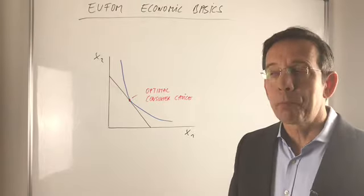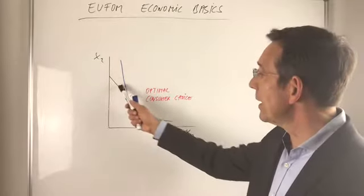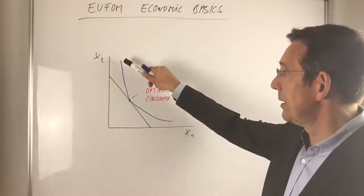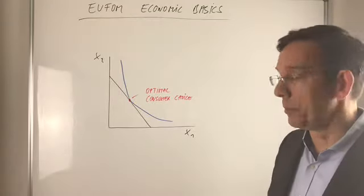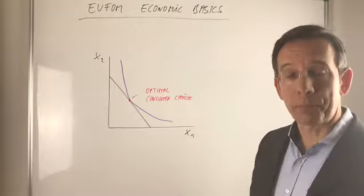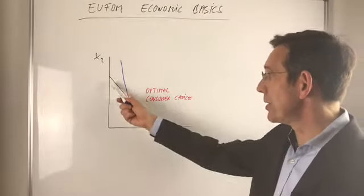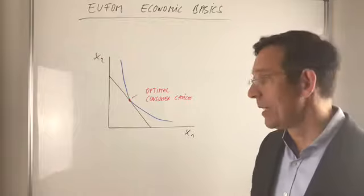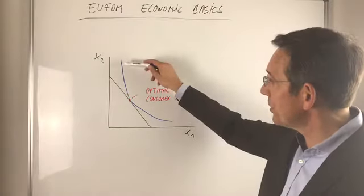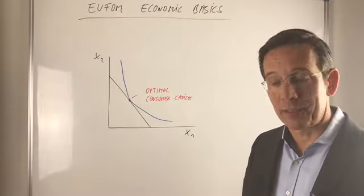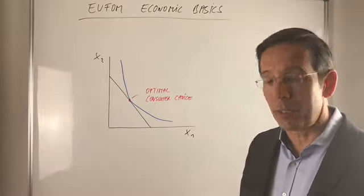Hi! So if we put together on the one hand the budget constraint and on the other hand the indifference curve in blue, then we end up with an optimal choice. The budget constraint reflects scarcity and the indifference curve reflects preferences. That's the main thing you should know about this diagram.